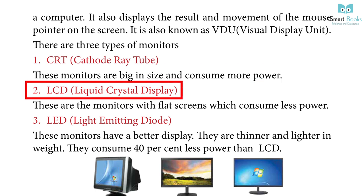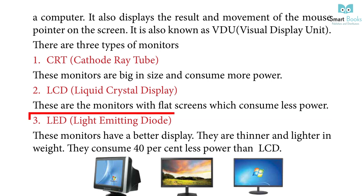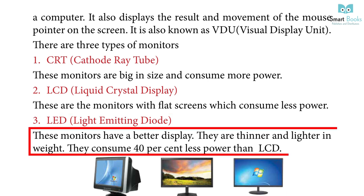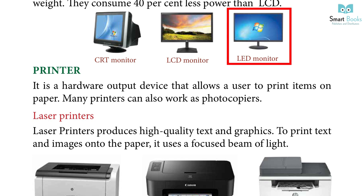2. LCD — Liquid Crystal Display: These are monitors with flat screens that consume less power. 3. LED — Light Emitting Diode: These monitors have a better display; they are thinner and lighter in weight. They consume 40% less power than LCD.